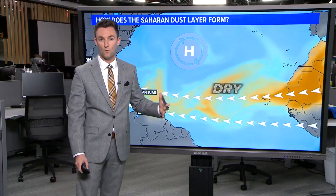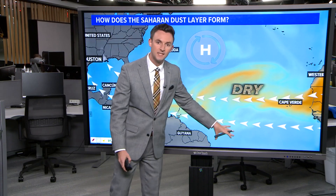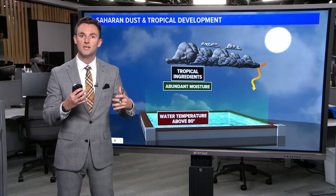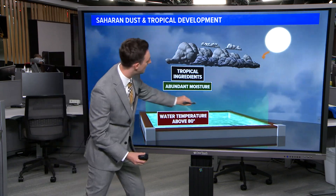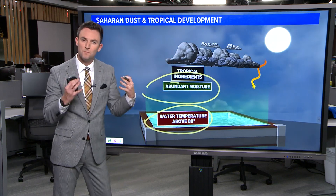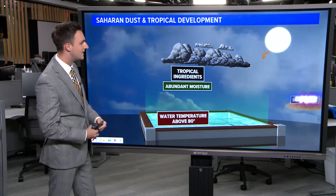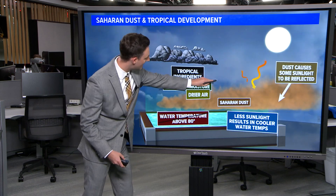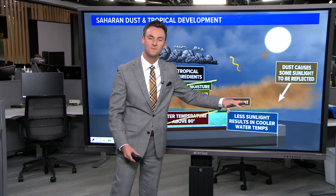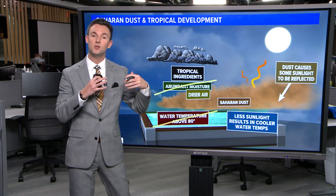Those trade winds have been absent so far this season, but that's not the case now. We finally have them starting to kick in, so it's adding some extra dry air to the atmosphere. So how does Saharan dust impact tropical development? These are the ingredients you need: a lot of moisture in the atmosphere, and water temperatures above 80 degrees — those are the two big ones. You also need a lack of wind shear. In the context of Saharan dust, those are the two things that get affected, because as that dust moves in, it gets rid of the moisture and it also lowers the water temperatures, because that dust concentration can sometimes be great enough to block out the sunlight, which results in cooler water temperatures.